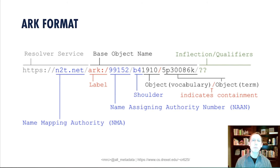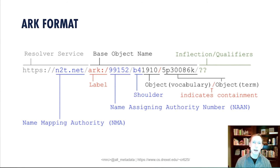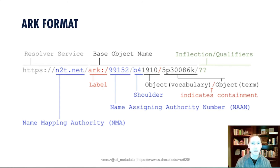If the format is opaque, how then is the ARC resolved? In this case, there will always be a means somewhere to determine who is responsible for a particular resource. This is represented by a shoulder — a conceptual categorization that indicates that the associated information object is the responsibility of Drexel University's metadata research center and that it is categorized as a subject vocabulary.